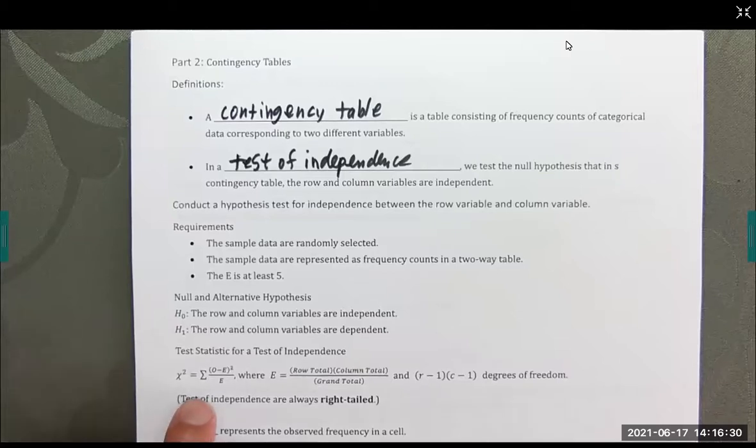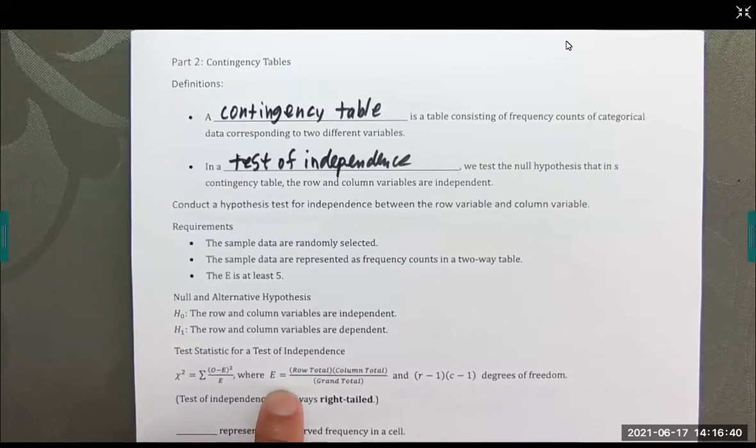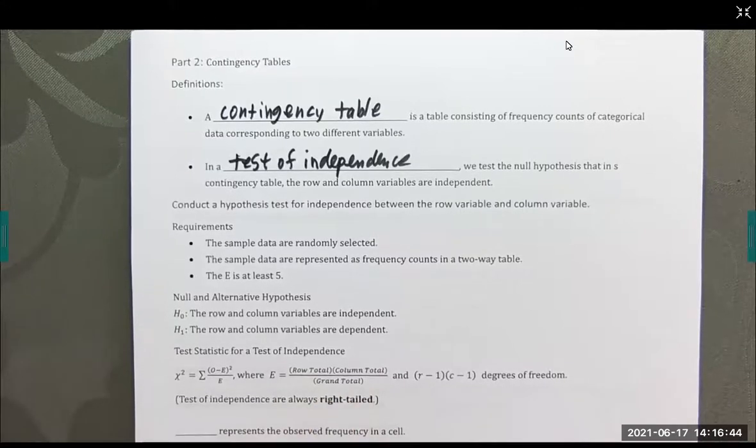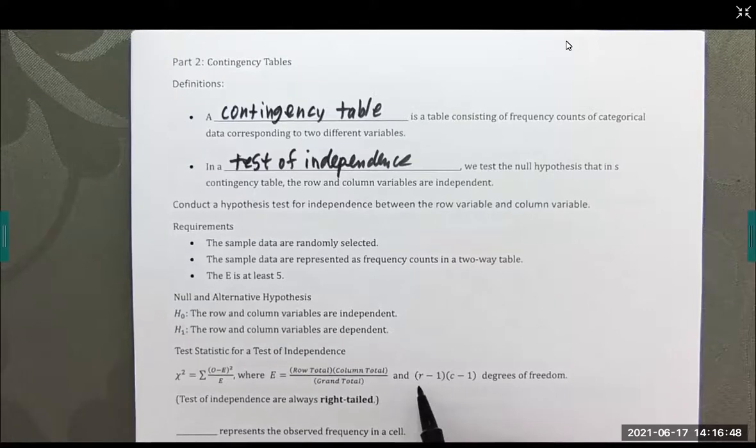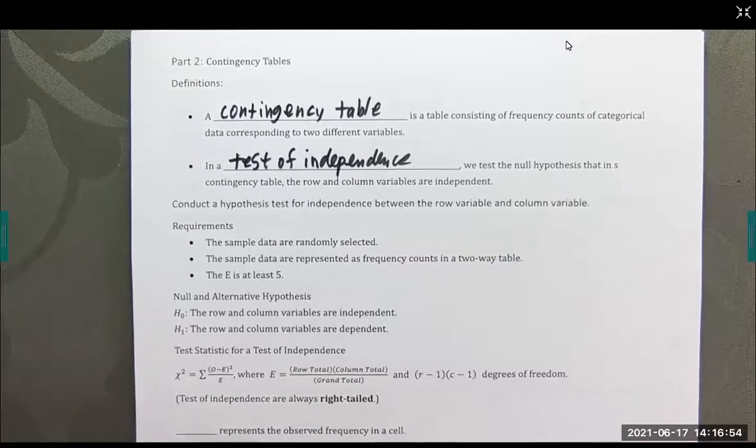Our test statistic, it's the same as with the previous lesson. But calculating E is much more complicated: the row total times the column total divided by the grand total. The degrees of freedom are going to be the number of rows minus one times number of columns minus one. And they're always right-tailed, just like before.